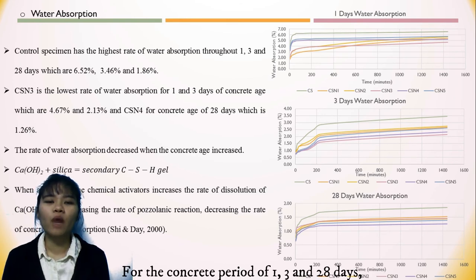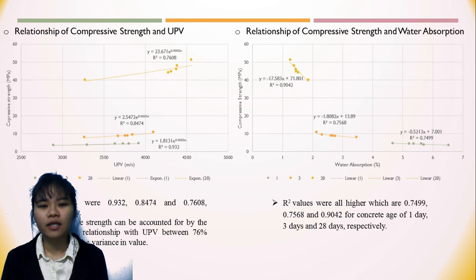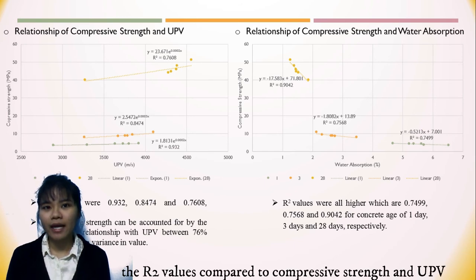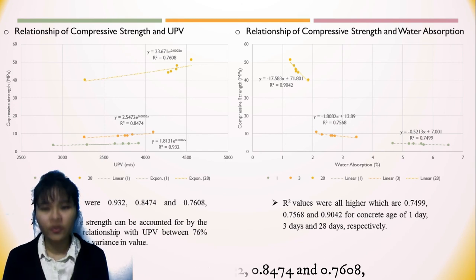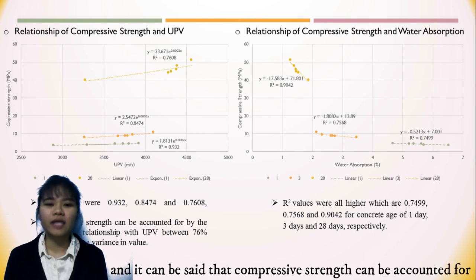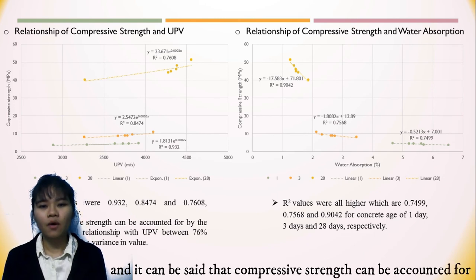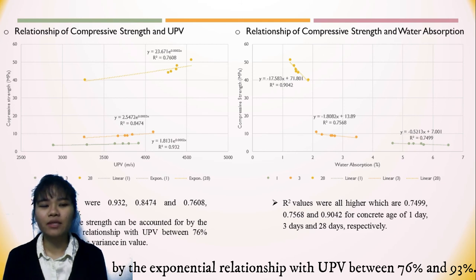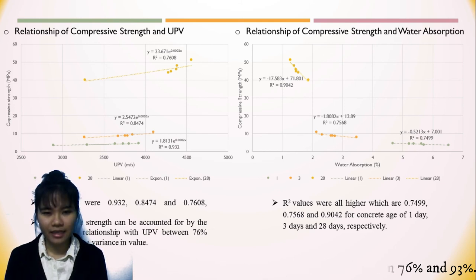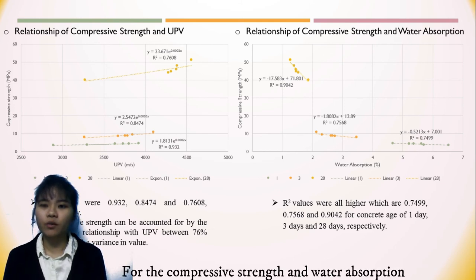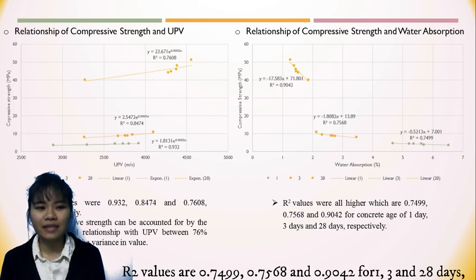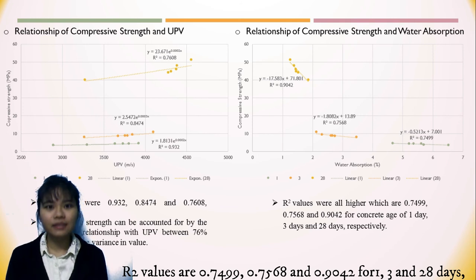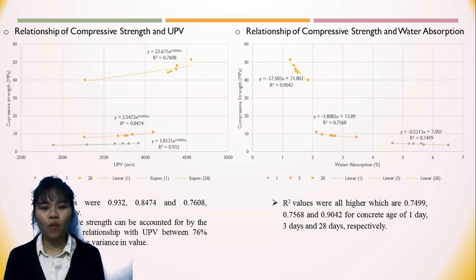For the correlation analysis, the R-squared values comparing compressive strength and UPV for 1, 3, and 28 days are 0.93, 0.8474, and 0.7608, respectively. It can be said that the compressive strength can be accounted for by an exponential relationship with UPV between 76% and 93%. For compressive strength and water absorption, the R-squared values are 0.7499, 0.7568, and 0.9042 for 1, 3, and 28 days.